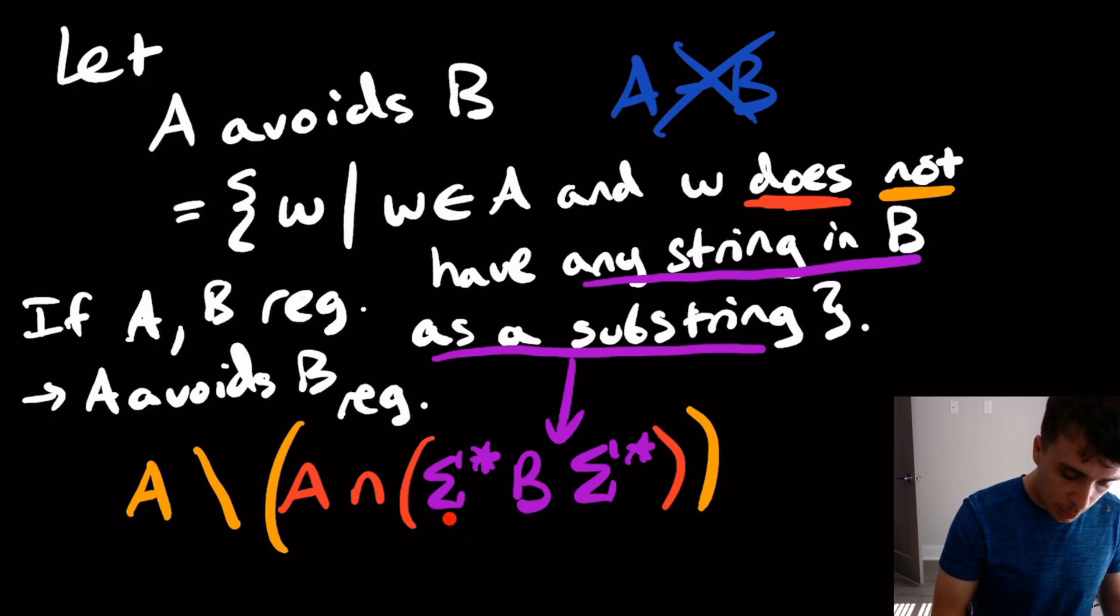Well, what we can do here is we can say, well, sigma star B sigma star, that is regular, because you can make an NFA for this pretty easily. And we'll do this as an example.